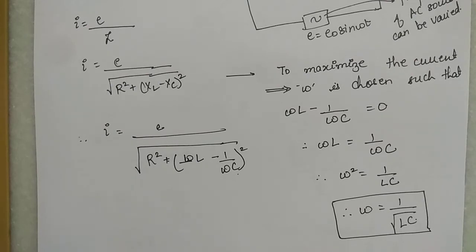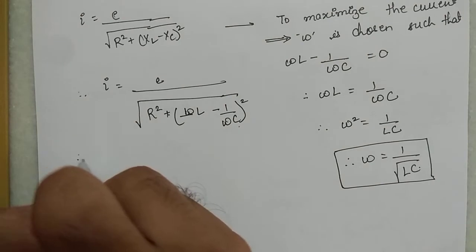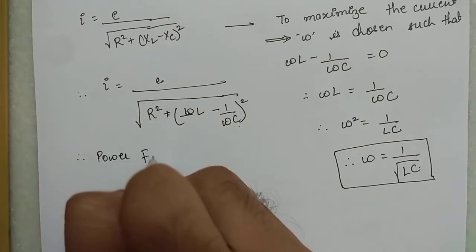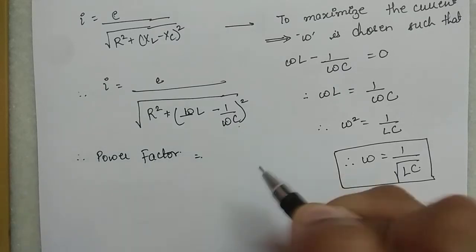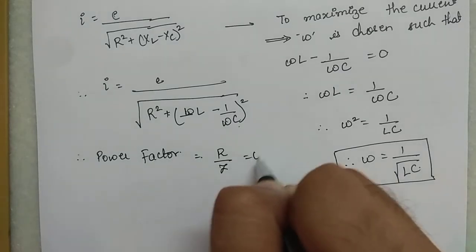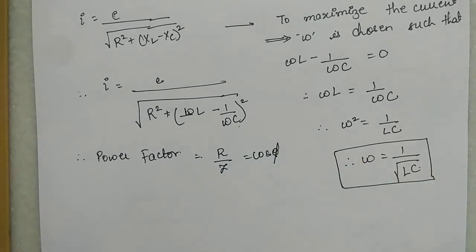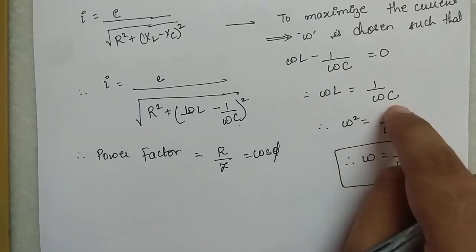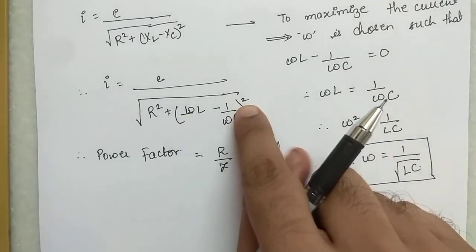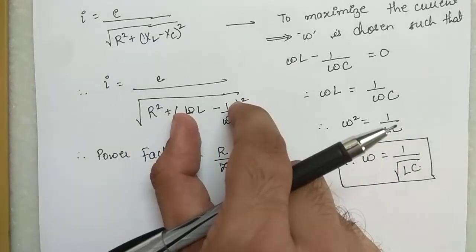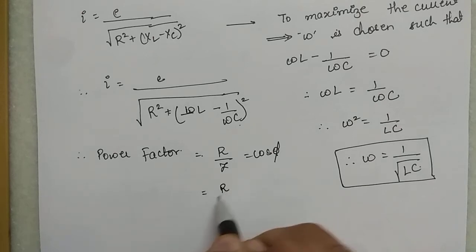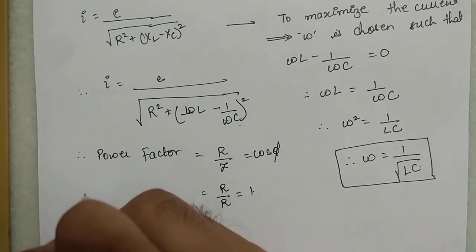Let's analyze further. The power factor cos φ equals R/Z, as derived for the series LCR circuit. If ωL equals 1/(ωC), then the (X_L − X_C) term becomes zero, so the impedance Z reduces to just R. Therefore the power factor becomes R/R, which equals 1.